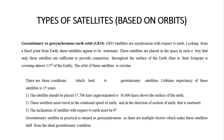The orbit of satellite is circular. There are 3 conditions which lead to a geostationary satellite. Lifetime expectancy of this satellite is 15 years. The satellite should be placed approximately 37,786 km, approximately 36,000 km, above the surface of the Earth. This satellite must travel at the rotational speed of the Earth and in the direction of motion of the Earth, i.e. eastward. The inclination of the satellite with respect to Earth must be 0 degrees. Geostationary satellite in practice is termed as geosynchronous, as there are multiple factors which make this satellite shift from the ideal geostationary conditions.